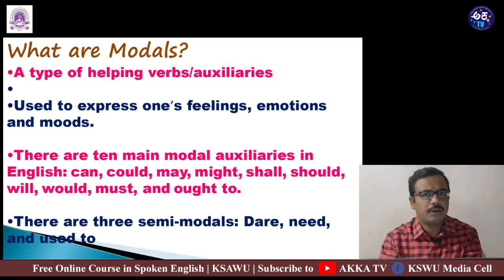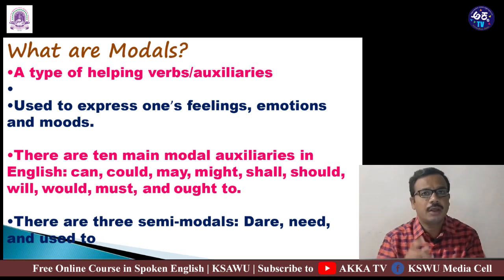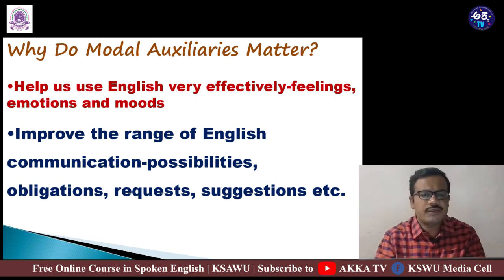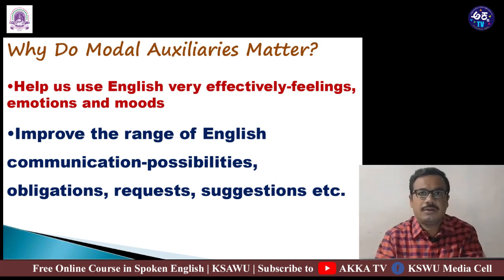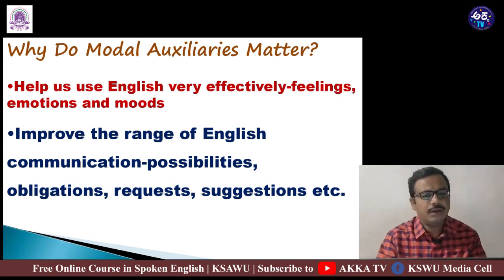There are ten main modal auxiliaries in English — easy to remember: can, could, may, might, shall, should, will, would, must, and ought to. There are also three semi-modals: dare, need, and used to — they sometimes function as modals and sometimes as main verbs. Why are modal auxiliaries necessary? Without them, speech won't be effective and we won't be able to convey the nuances of feelings, emotions, and moods.